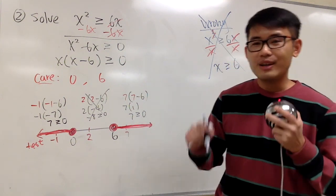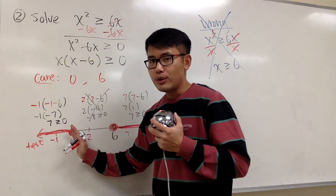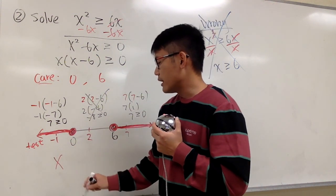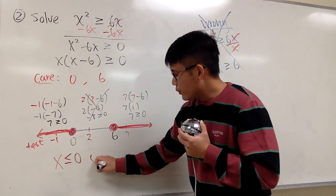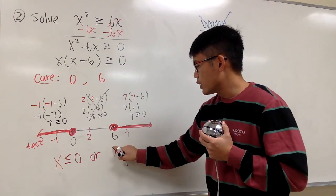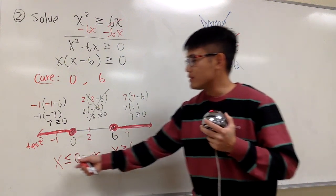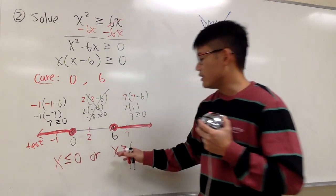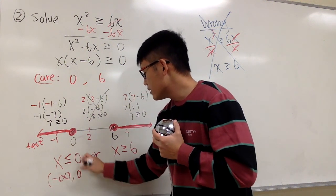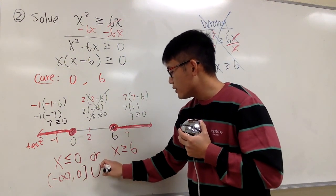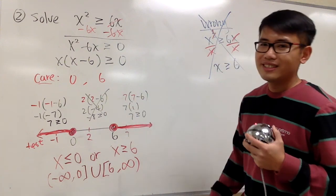Now write down the answer. We have two intervals. The first is 0 and everything to the left, including 0, so x ≤ 0. The second is 6 and everything to the right, including 6, so x ≥ 6. Whenever we have two pieces, we write the inequality with two separate x statements. In interval notation: negative infinity to 0 with a square bracket at 0, union with 6 to infinity with a square bracket at 6 — written as (−∞, 0] ∪ [6, ∞).